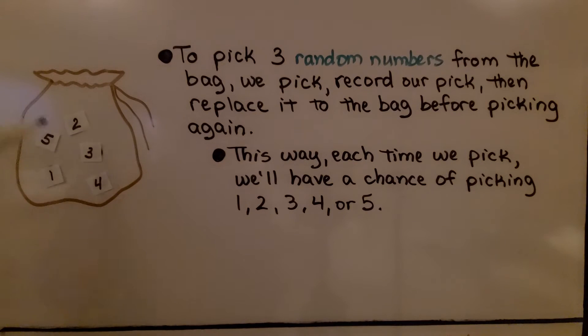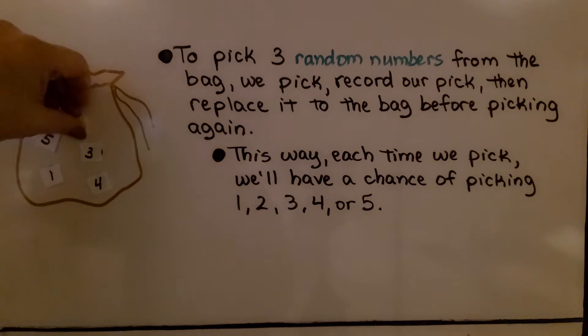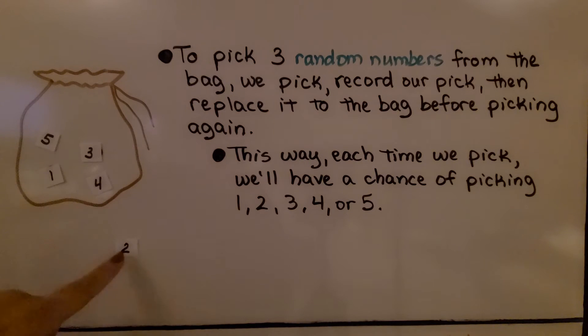Here we have a pretend bag with numbers one through five in it. To pick three random numbers from the bag, we pick. We would reach in the bag, pick a number, record whatever we picked, and then replace it into the bag before picking again.